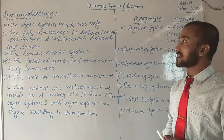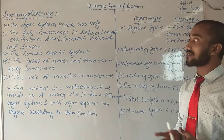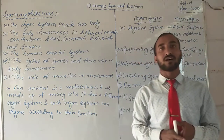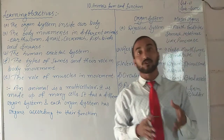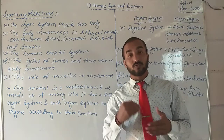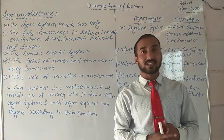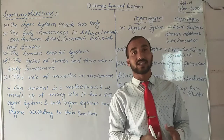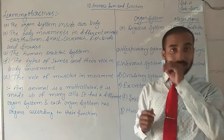The first learning objective is: we will discuss the organ systems inside our body — what organ systems are present, how many organ systems are required to form and function our bodies, and how living organisms and animals are functioning. We will collect all this information in this chapter.